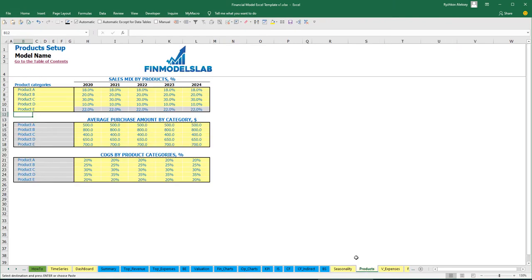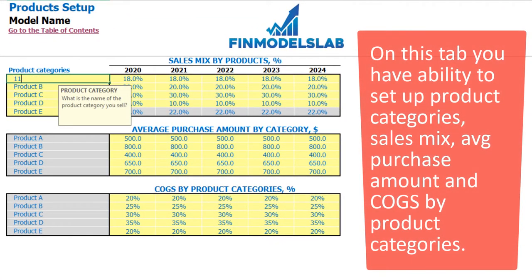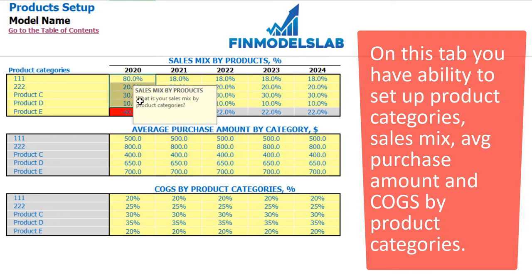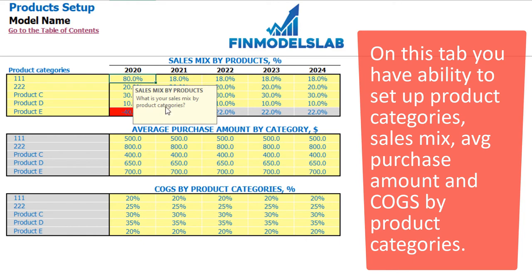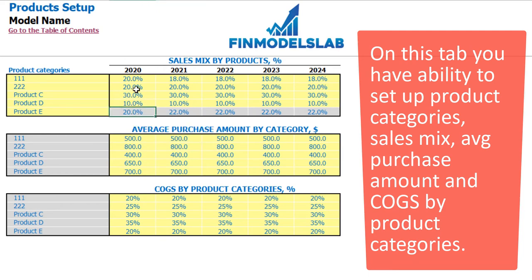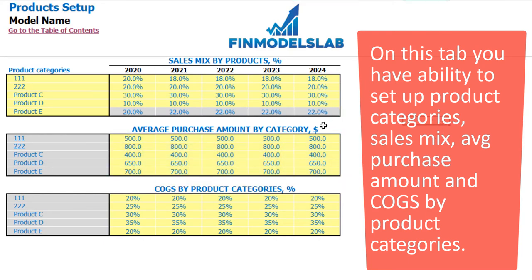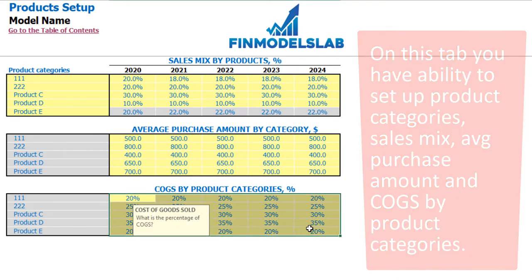On the product step you can input product category names and set up the sales mix by product. If you input the breakdown incorrectly — for example, where the remaining product would be -40% — you will see a red color indicating an error. If the breakdown is correct and the sum of the first four categories is less than 100%, product E will pick up the remainder to reach 100%. Correct inputs show in gray. Below you can set up the price and COGS by product category by year as a percentage of revenue.